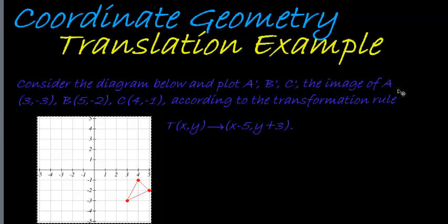The image of A, which is (3, -3), so there's 3, -3, which means that is A. Then B is (5, -2), so that is B right there, and then C is (4, -1), so this is the coordinate C.